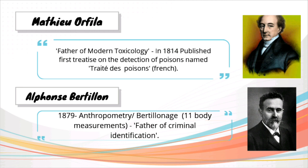Then coming to Alphonse Bertillon. In the year 1879 he developed a system of identification of suspects and criminals called anthropometry. This includes 11 body measurements that help in identifying the suspect. Because of this contribution he was considered the father of criminal identification.